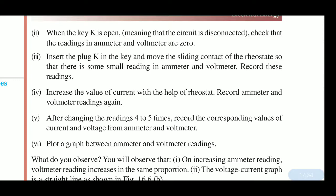Check that the readings on the ammeter and voltmeter are zero when the key is open (circuit disconnected). Then insert the plug key and move the sliding contact of the rheostat so that there is a small reading on the ammeter. Record the readings on the ammeter and voltmeter. The rheostat is a device which has many resistors of different values built in, which we use here.